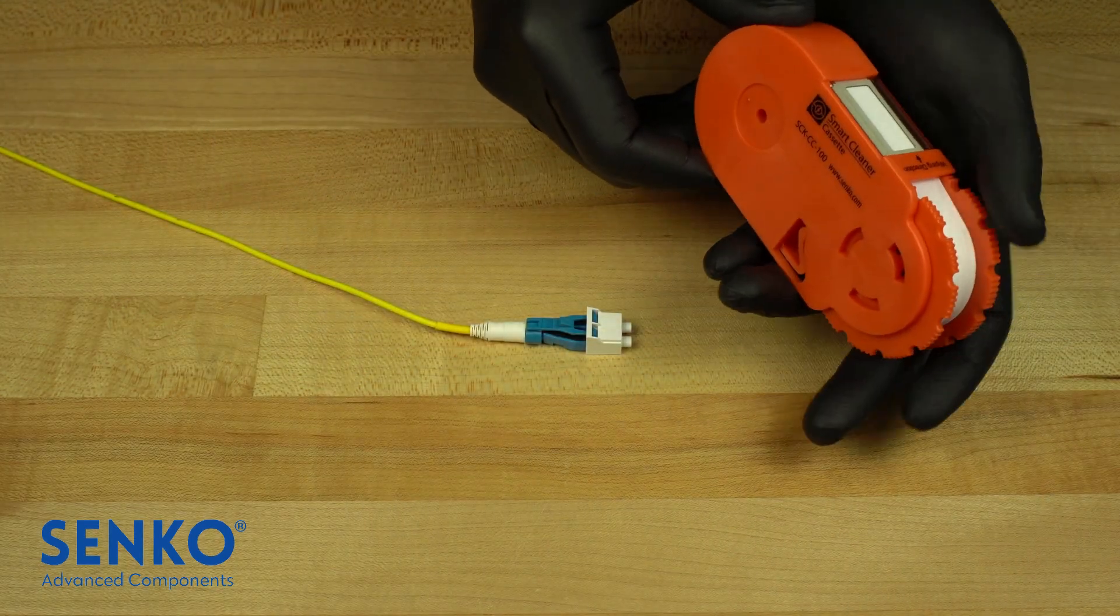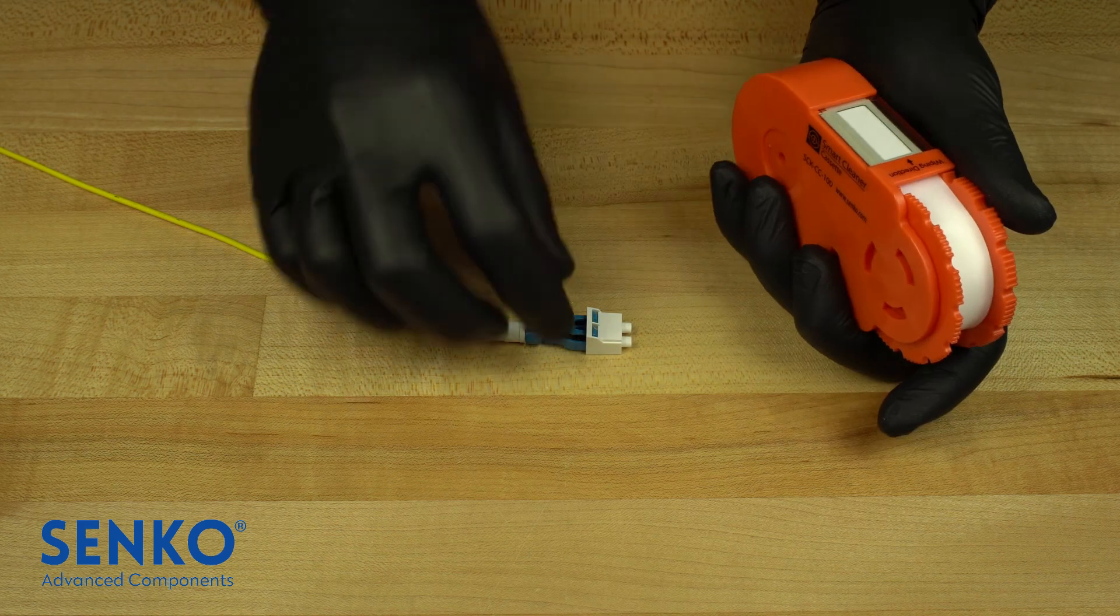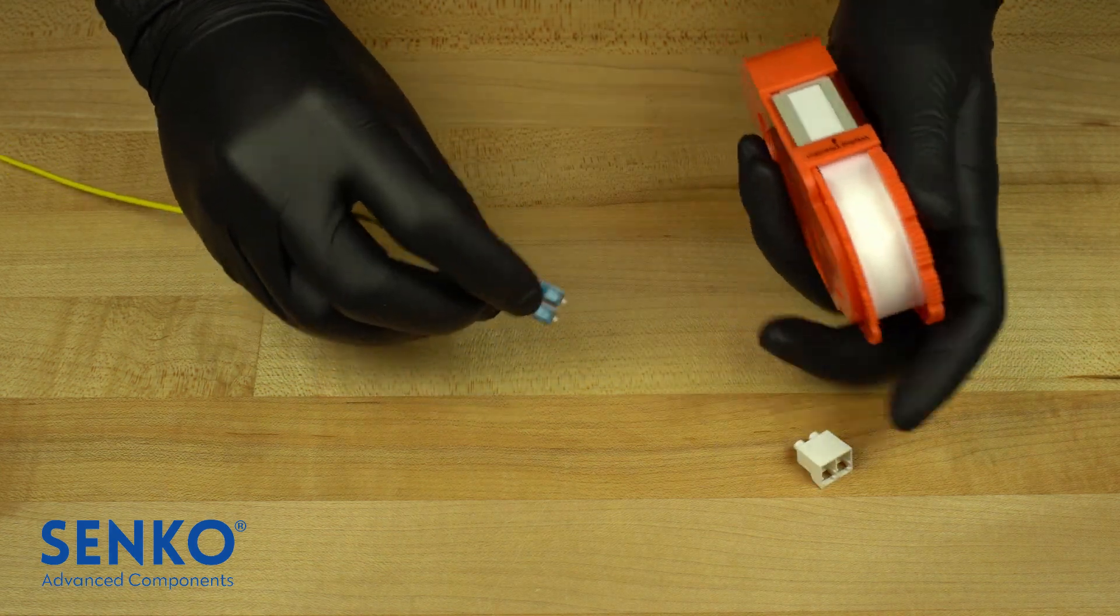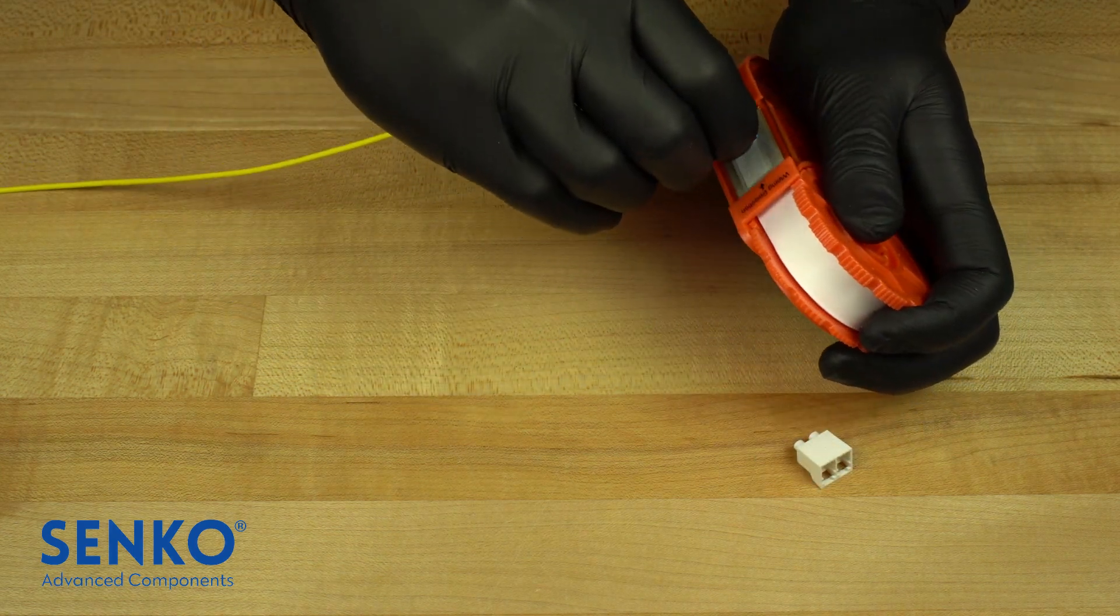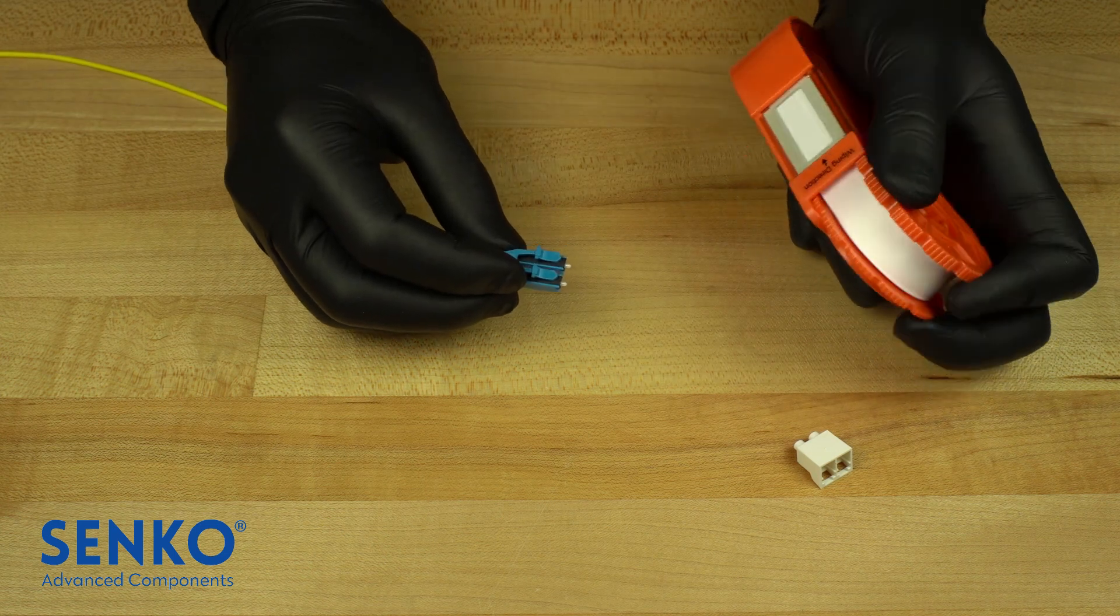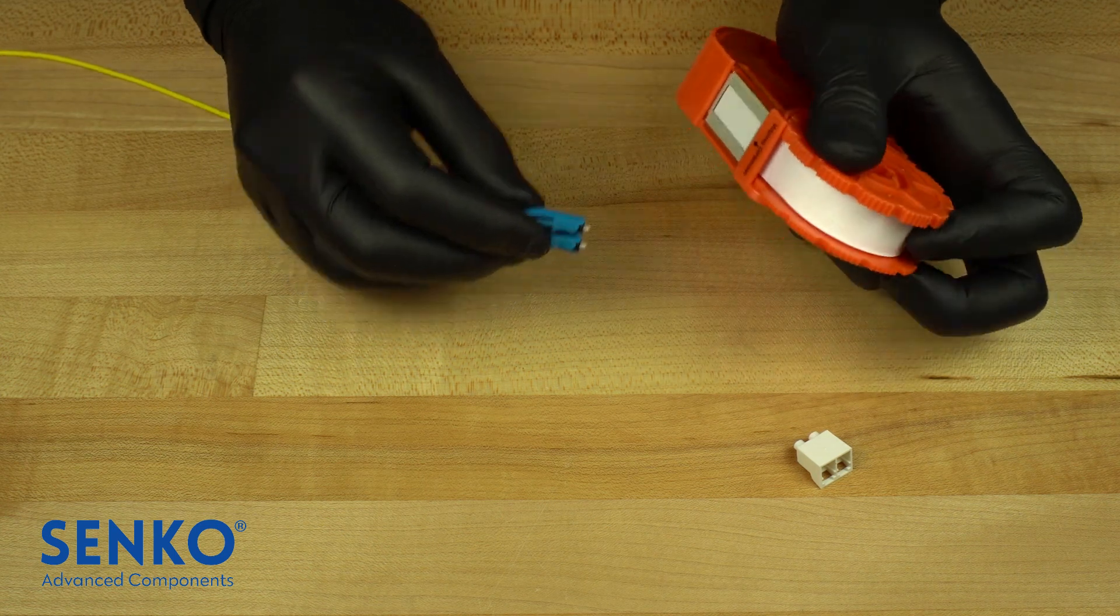The proper technique is to scroll the wheel to expose a fresh patch of cleaning ribbon. Gently apply the ferrule end faces on the cleaning cloth and wipe them in the proper wiping direction as indicated on the cleaning cassette.